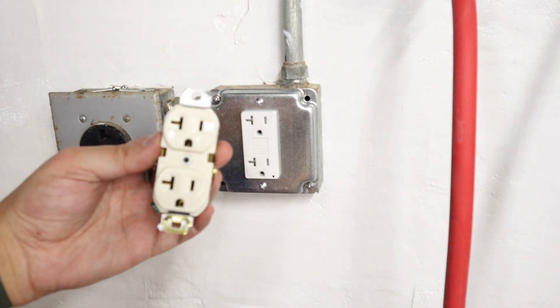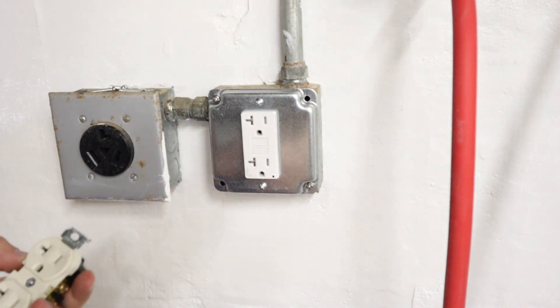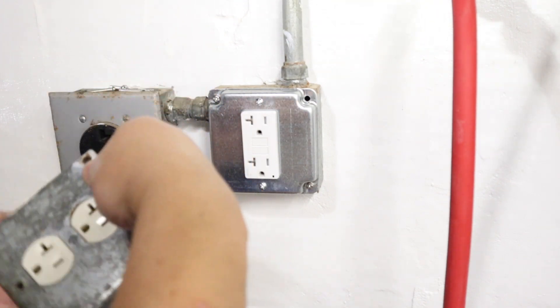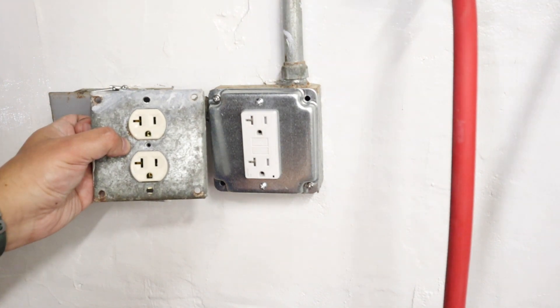To summarize what I did: this is a 20 amp outlet and since there's no ground wire here, I wanted the GFCI protection. You can see what this looked like before and what it looks like now.